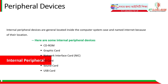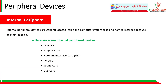Internal peripheral devices are generally located inside the computer system case, and they are named 'internal' because of their location. Here are some examples of internal peripheral devices: CD-ROM, graphics card, network interface card.